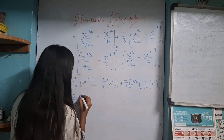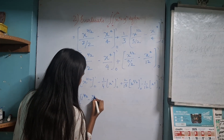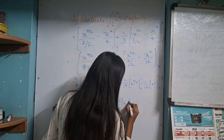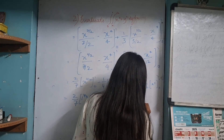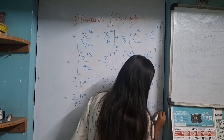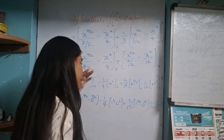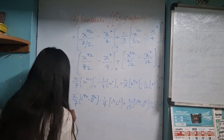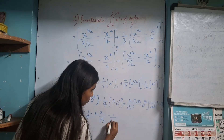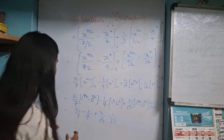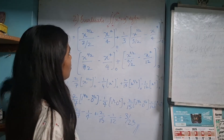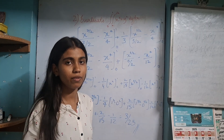Now substitute the limits: upper limit 1, lower limit 0. Substitute 1 then 0 into all x terms. 1 raised to anything is 1 itself, and 0 raised to anything is 0. So at the end of the day your values reduce simply. After putting these values in the calculator, your answer will be 3 by 25. That's it — the second problem is also solved clearly with each step explained one after another. Thank you.